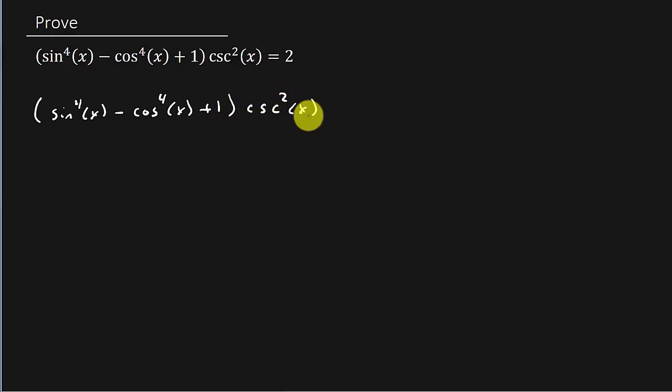All right, so obviously this first part here I can factor that. That's the difference of two squares, so that's going to factor into sine squared minus cosine squared times sine squared plus cosine squared, and then plus one.